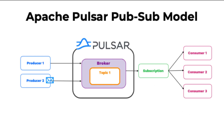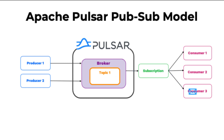Let's watch it here in action. Producer 2 attaches to Topic 1 and publishes a message to the broker. The broker sends an acknowledgement back to the producer. Consumer 3 is subscribed to Topic 1. It receives the incoming message and sends an acknowledgement back to the broker when processing is finished.